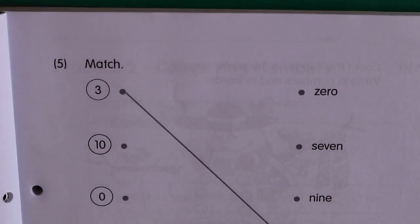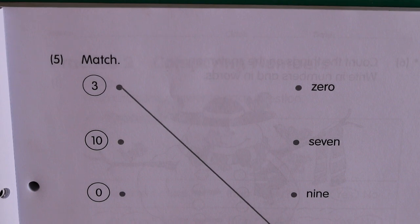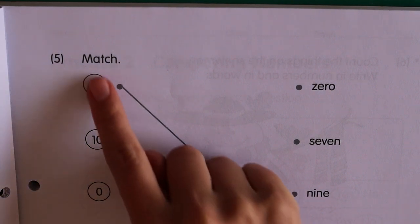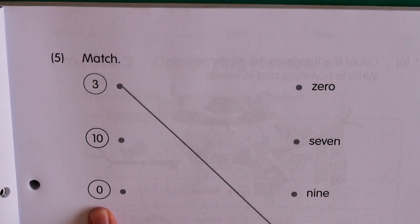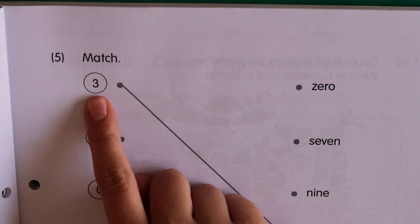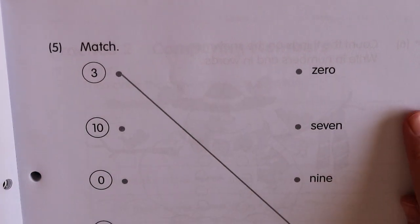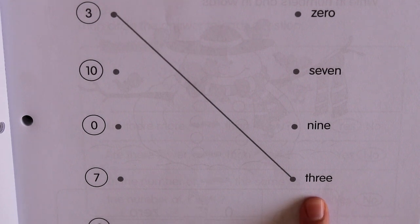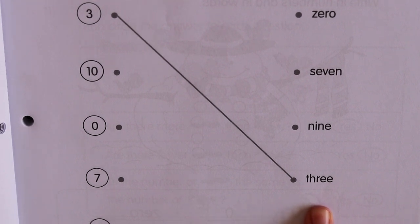Page five. Match. It's nearly the same as the last one. But this one, this time you don't need to count the animals or the bugs. You just read the numbers. So there's the number three. And it got matched. It got matched to the word three.